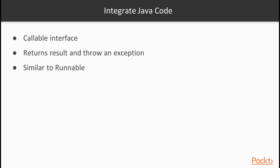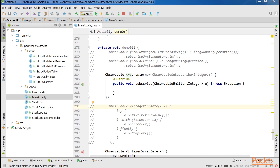The simplest way to integrate any Java code into RxJava is to use the callable interface. It's an interface that represents an operation that returns some result and can throw an exception. It's very similar to runnable, however the runnable interface doesn't return any value. To make callable a part of a reactive flow, the fromCallable method can be used on observable.